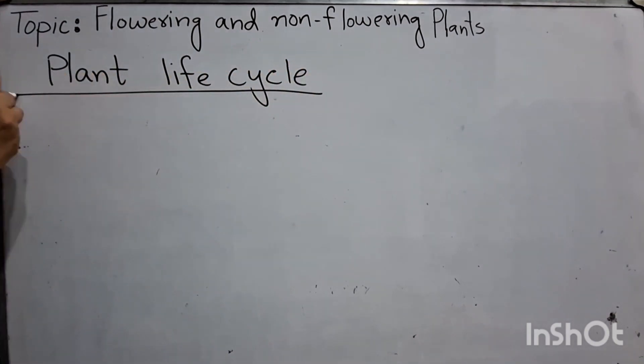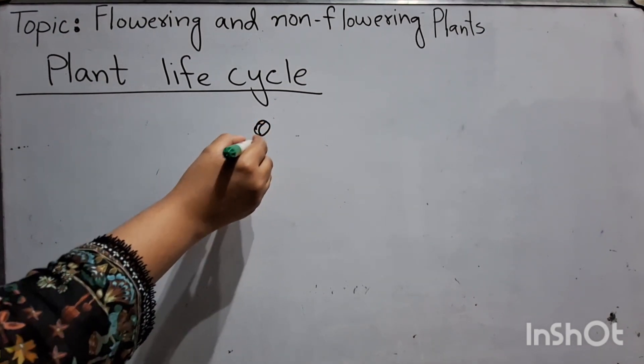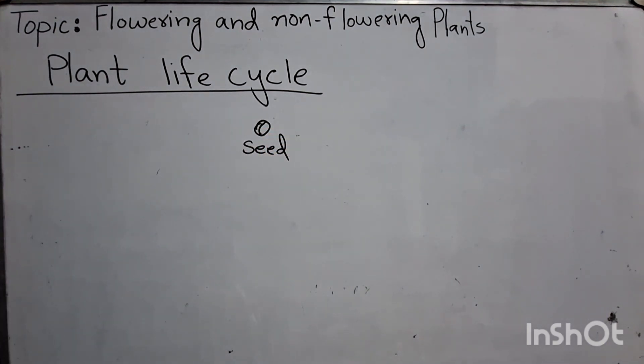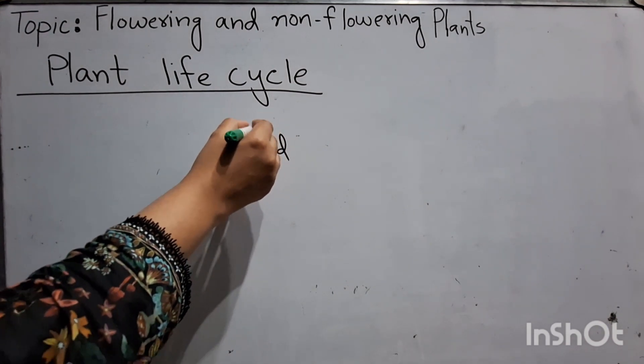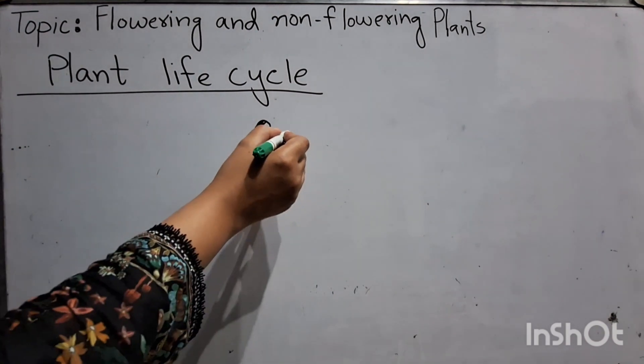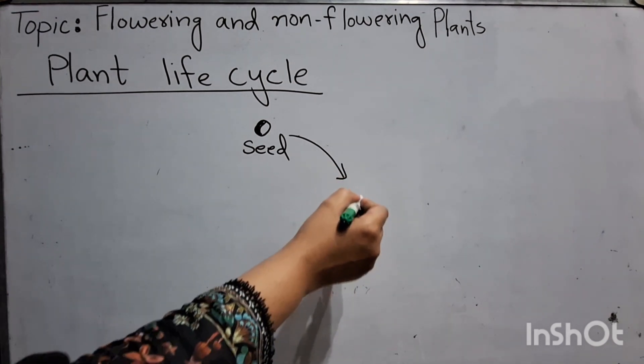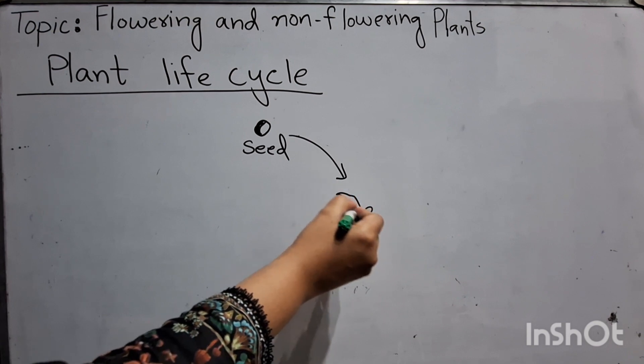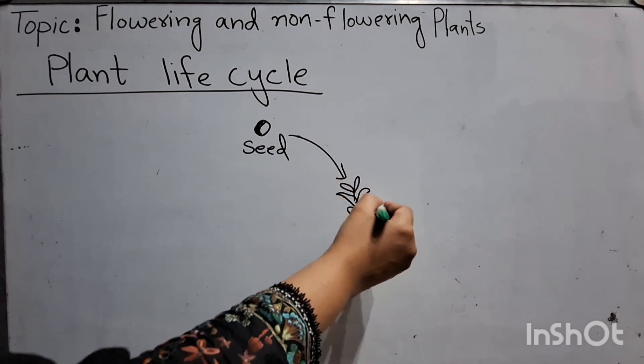Plant life cycle starts from seeds. Seeds come from fruit and it will grow into plant.